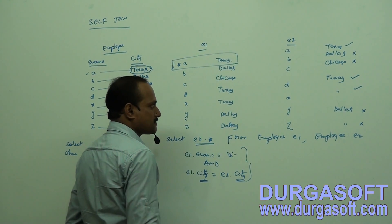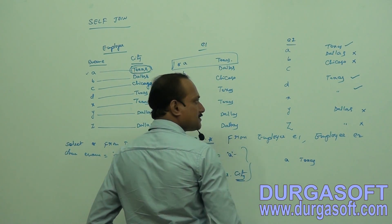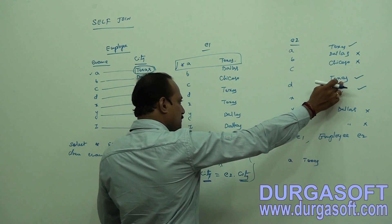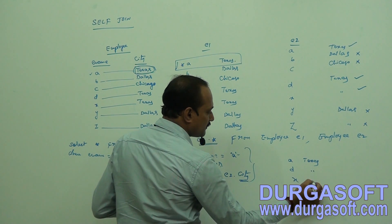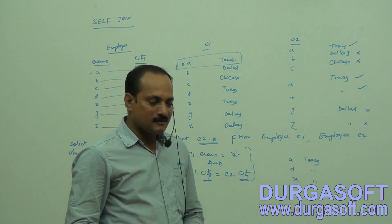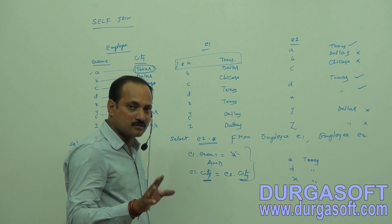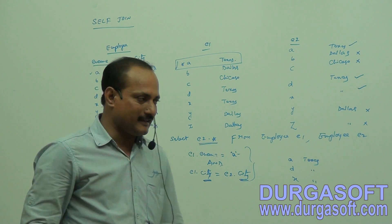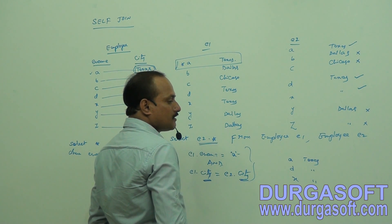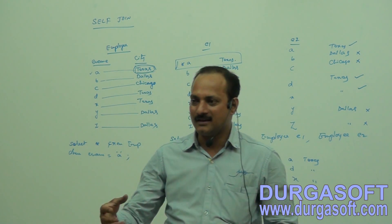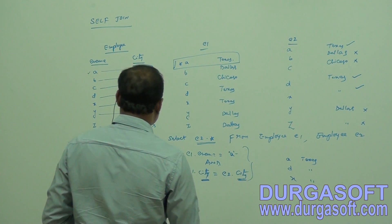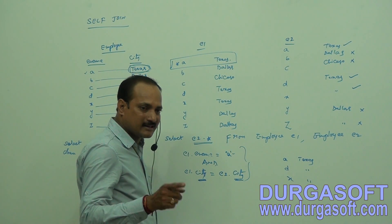Whenever there is a match, both conditions are true and the AND operator enables the SELECT statement to get the output from the second alias table. So the result is: A - Texas, D - Texas, X - Texas. Always select data from the second alias table, not the first. If you select from the first alias table, it will display duplicate data. Suppose 100 employees are living in the same city as A — then A's information will be displayed 100 times.